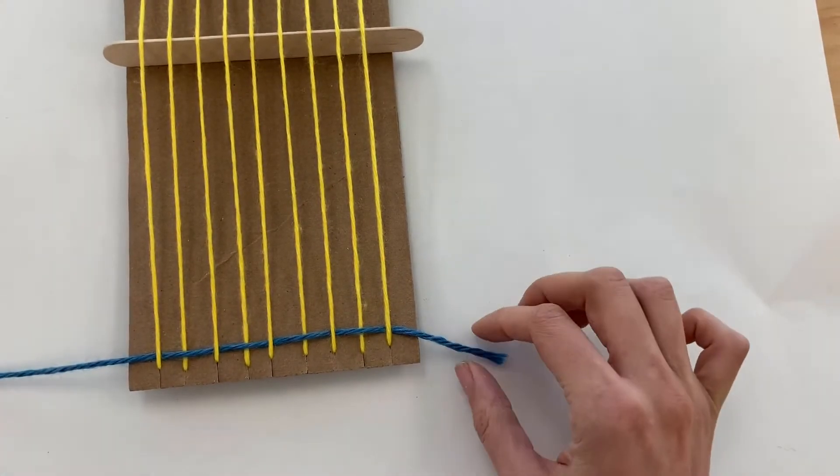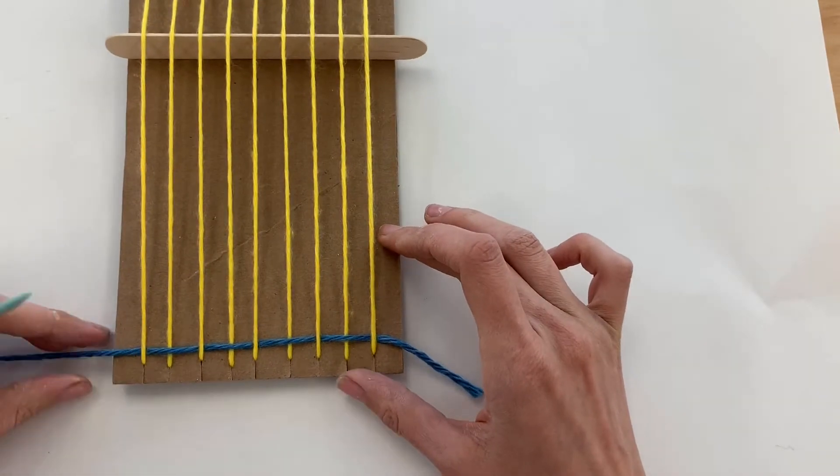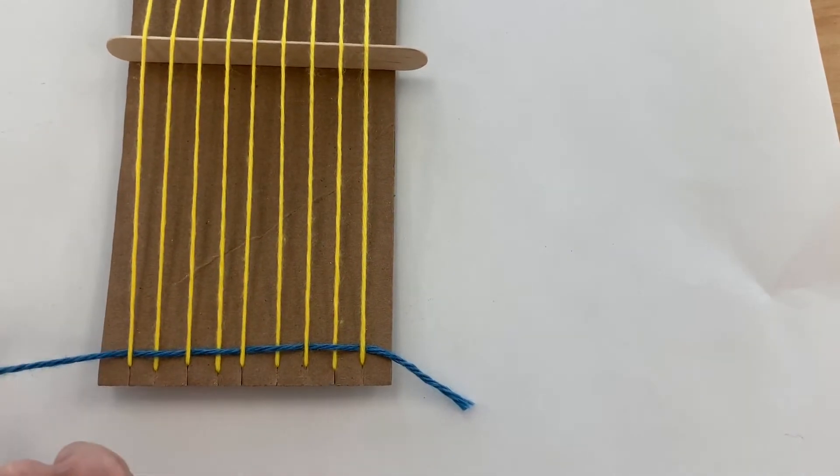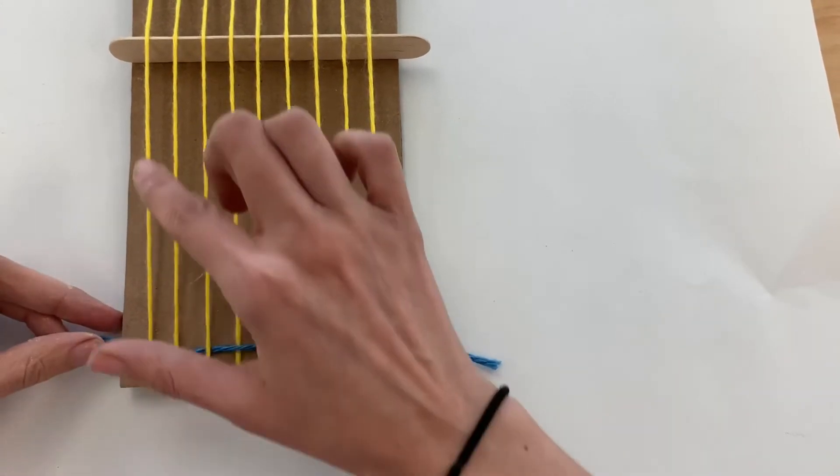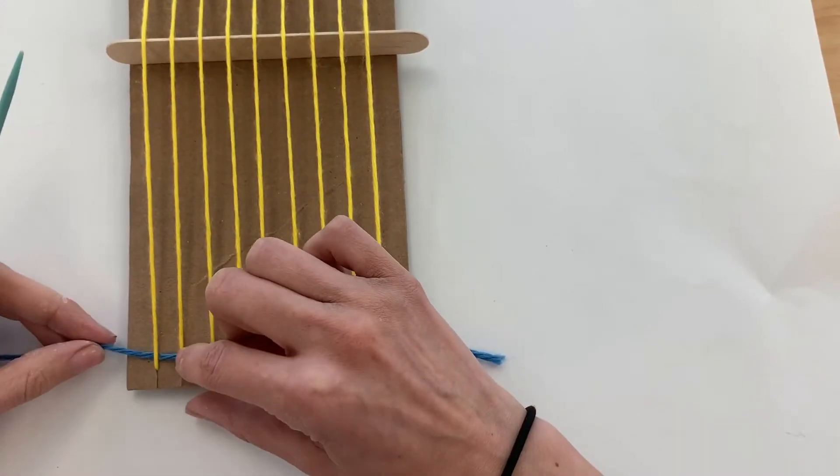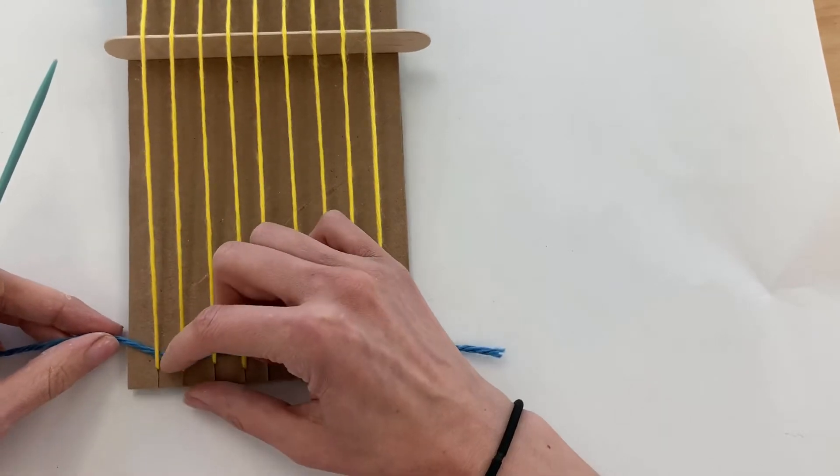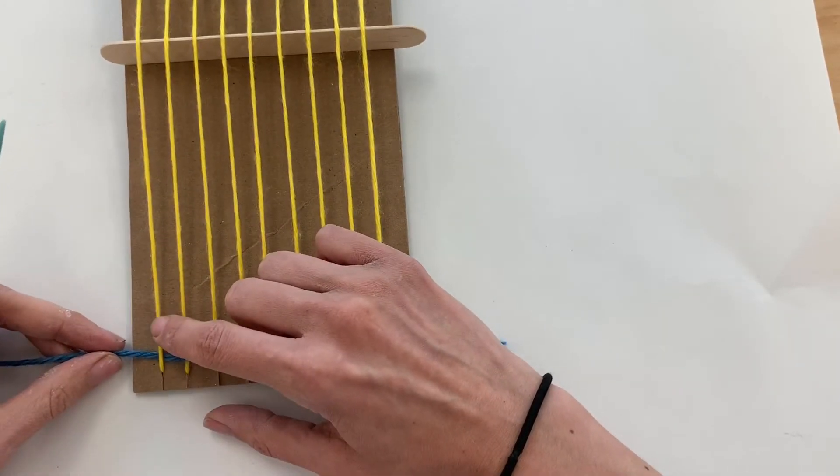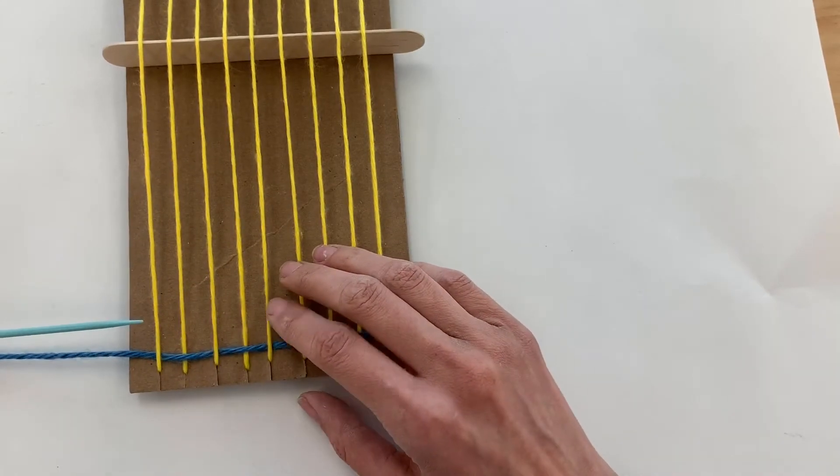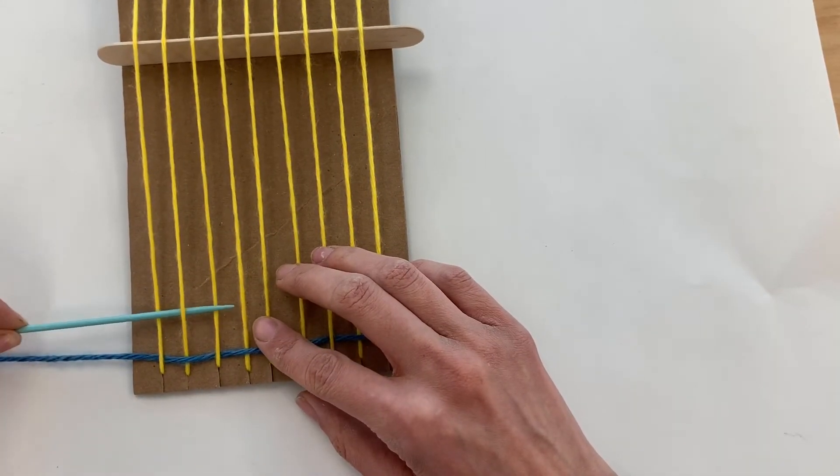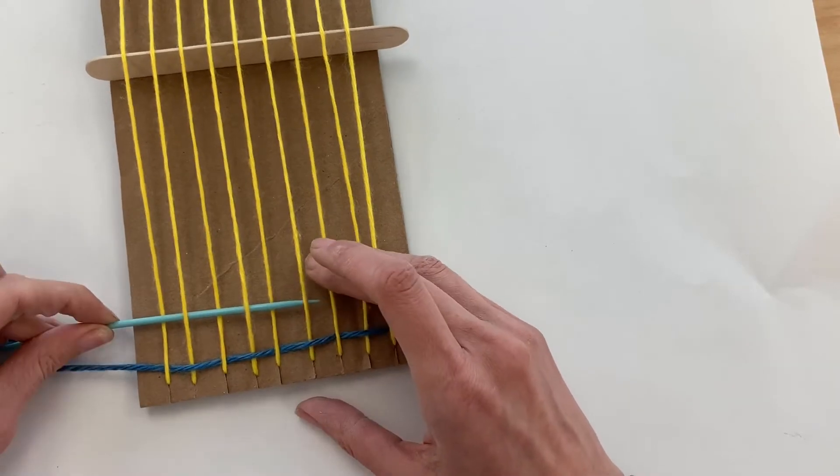Then when I'm ready to come back from this side, I'm always going to come back weaving from the side where I have this long piece of string hanging here, and I'm going to look at what I did with my last warp thread. If I'm looking at my blue yarn, that went under this yellow warp thread, so when I come back this way, I've got to make sure that I go over that yellow warp thread, and then continue my pattern of going over and under all the way across.